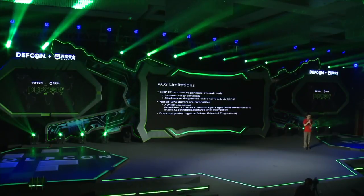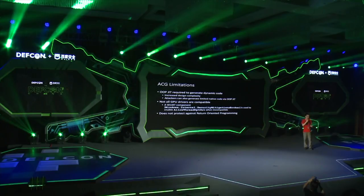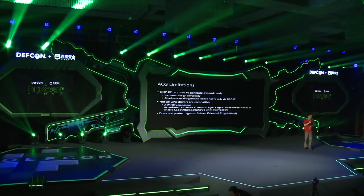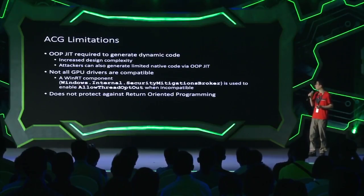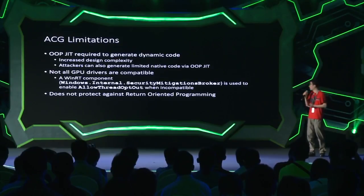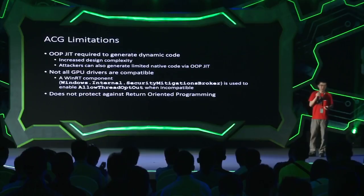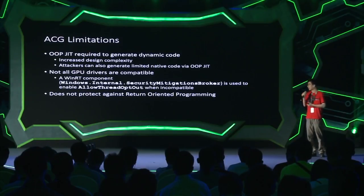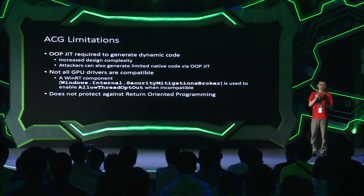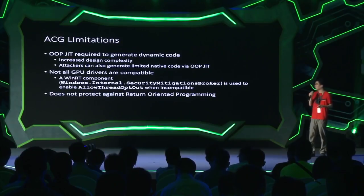ACG has its own set of limitations. It increases design complexity dramatically because it requires out-of-process compilation for any dynamic code. Attackers can also generate limited native code via the out-of-process JIT, because the JIT server cannot distinguish between legitimate and illegal requests for JIT code compilation. Not all GPU drivers are compatible with ACG — Windows 10 uses a blacklist to detect any incompatibility, and if detected, it uses an opt-out switch to disable the ACG. Additionally, ACG does not protect against return-oriented programming, or ROP, since ROP does not generate any new code or modify any existing code, so it does not trigger any ACG policies.